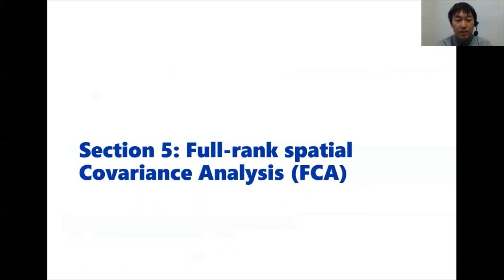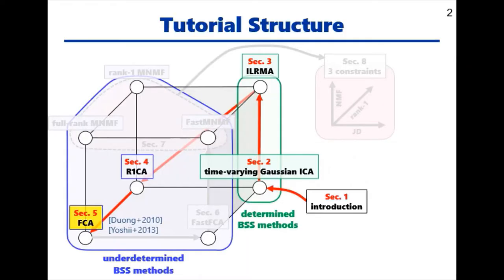This is section 5 of our tutorial. The section title is Full-Rank Spatial Covariance Analysis. In this section, we introduce FCA, which is an under-determined BSS method proposed by Duong, Vincent, and Gribbenwald in 2010.